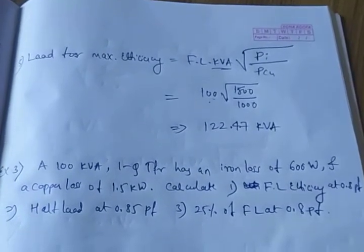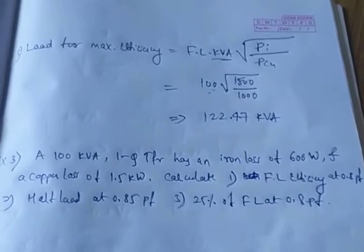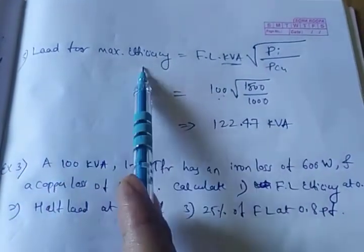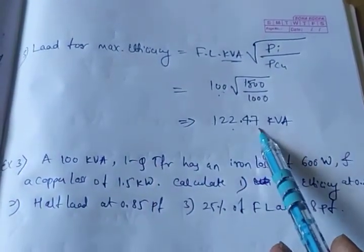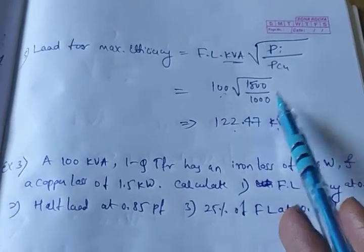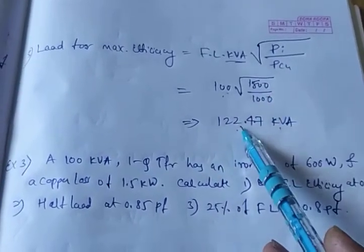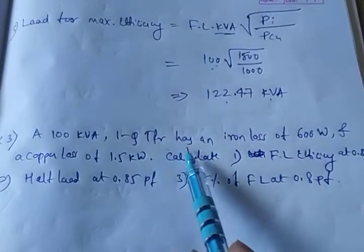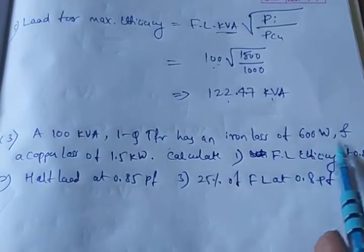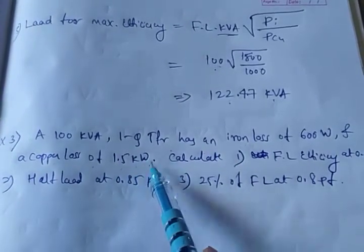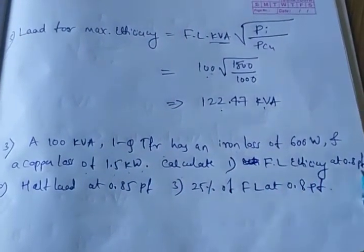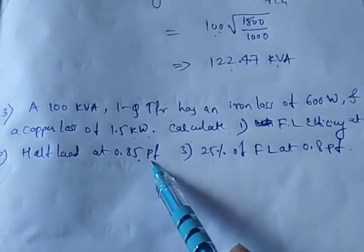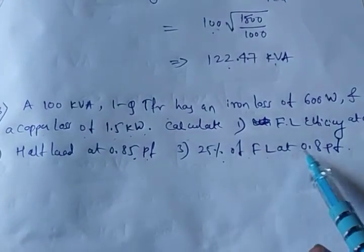Hello dear students, today I will continue the numerical on efficiency of a transformer. In the last problem, example 2, the answer for load for maximum efficiency is 122.47 kVA. The next problem: a 100 kVA single-phase transformer has an iron loss of 600 watts and copper loss of 1.5 kilowatts. Calculate full load efficiency at 0.8 power factor, second at half load 0.85 power factor, and 25 percent of load at 0.8 power factor.